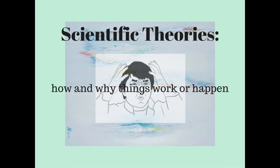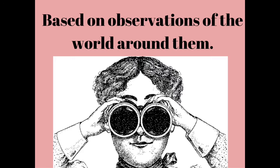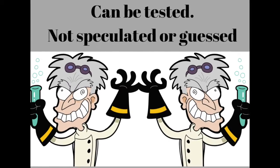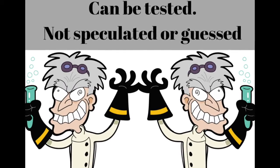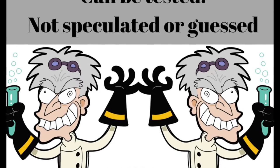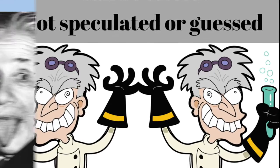A scientific theory is an explanation of why things work or how things happen. Scientists develop theories based on their observations of the world around them. Theories are based on ideas that can be tested. Theories are not speculative or based on a guess.